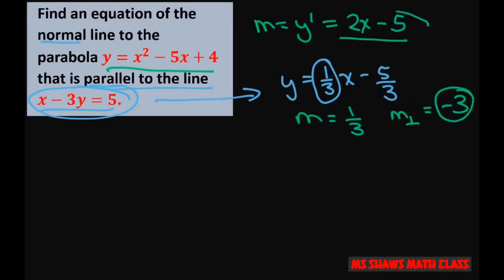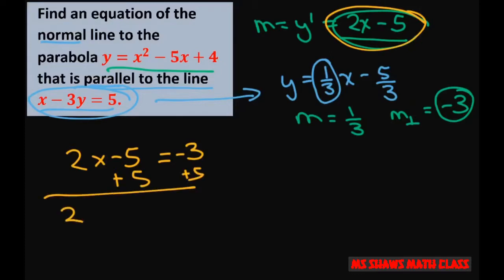Then you write this slope 2x minus 5, and we want it to equal negative 3. When you add 5 to both sides, you get 2x equals 2. So, x equals 1.